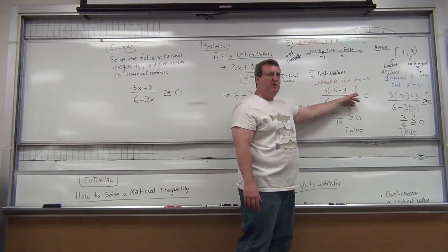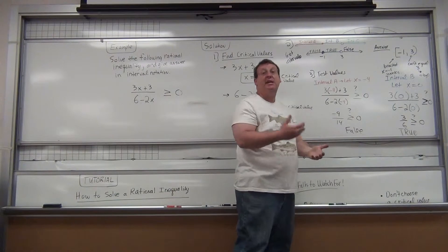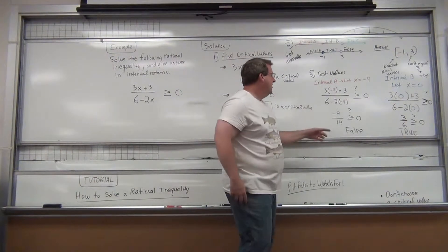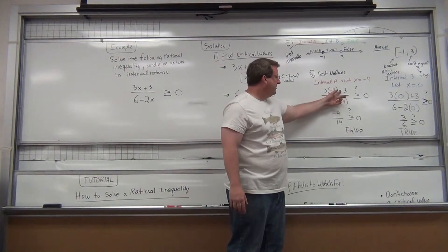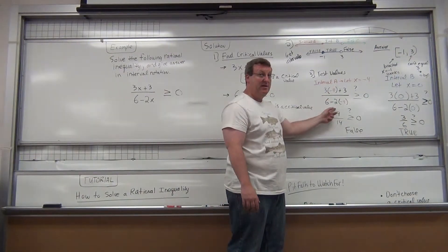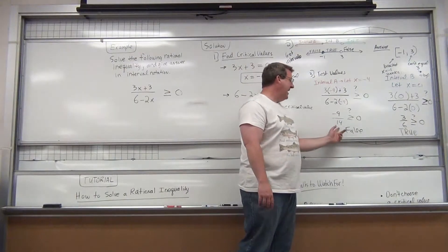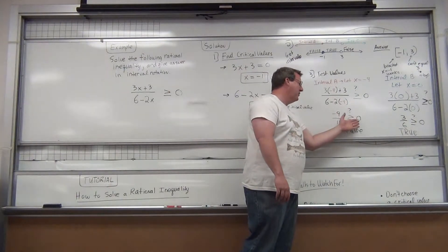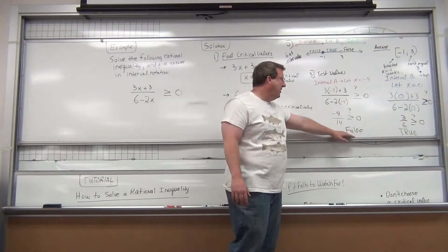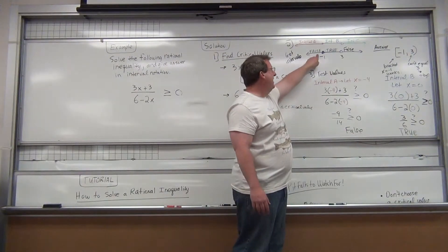So, you plug in negative four. I put a question mark here to see, we're testing to see if it actually works, to see if it's an x value that makes the inequality true. So, 3 times negative 4 plus 3 gives you a negative 9. On the bottom, you end up getting a 14 when you plug in the negative 4. Is negative 9 fourteenths a negative number greater than or equal to zero? No. So, you put a big false, put a false on that interval.